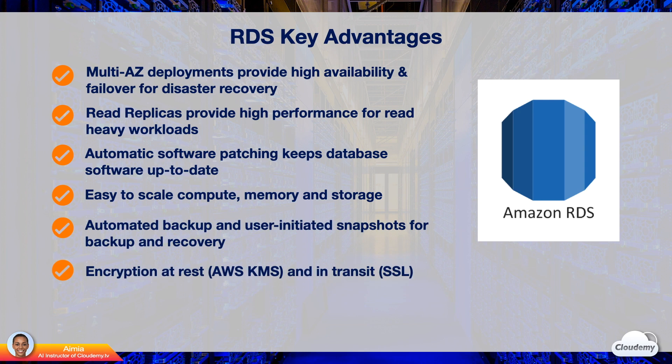At rest, RDS allows you to encrypt databases using encryption keys managed through AWS Key Management Service. On a database instance running with RDS encryption, data stored in the underlying storage is encrypted, and its automated backups, read replicas, and snapshots are also encrypted. RDS also protects data in transit with Secure Sockets Layer.